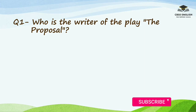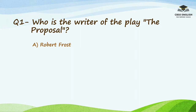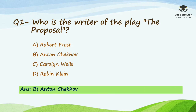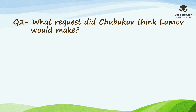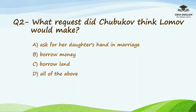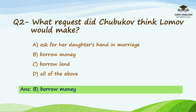Question number 1: Who is the writer of the play The Proposal? Options are Robert Frost, Anton Chekhov, Caroline Wells, or Robin Klain. The right option is Anton Chekhov. Question number 2: What request did Chubukov think Lomo would make? Options are ask for her daughter's hand in marriage, borrow money, borrow land, or all of the above. The right option is Borrow money.